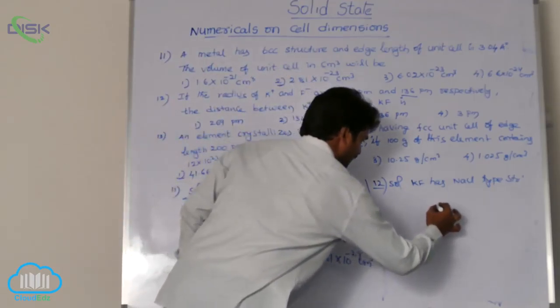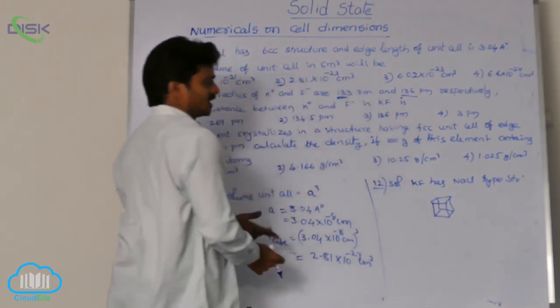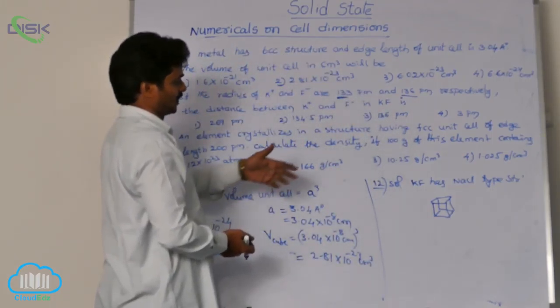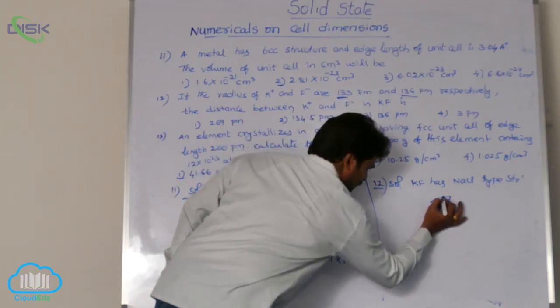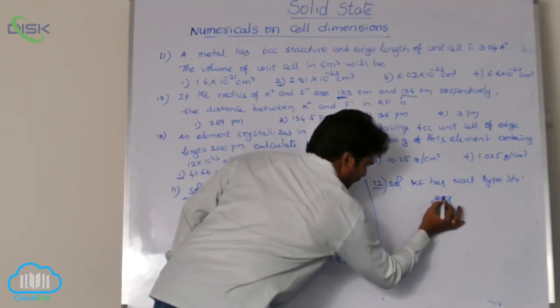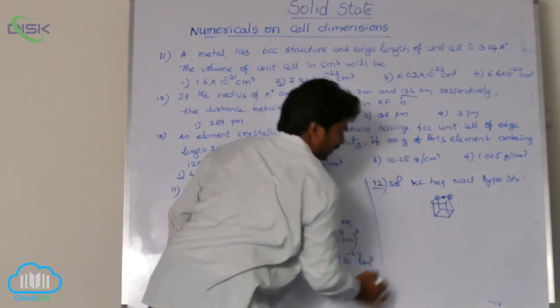When we draw a cube, in this cube, where the potassium and sodium ions are, potassium and fluoride ions are, I said earlier, this is potassium ion, these are fluoride ions.